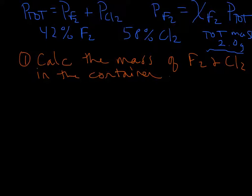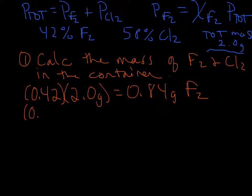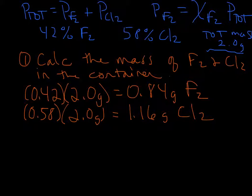For fluorine first: the fraction of fluorine is 0.42, and we multiply that by our total mass of 2.0 grams. That gives us 0.84 grams of fluorine gas. For chlorine: 0.58 times 2.0 grams gives us 1.16 grams of chlorine gas. If we add those up, we get 2 grams, which checks out with our total mass. So now we know the mass of each gas in the container.